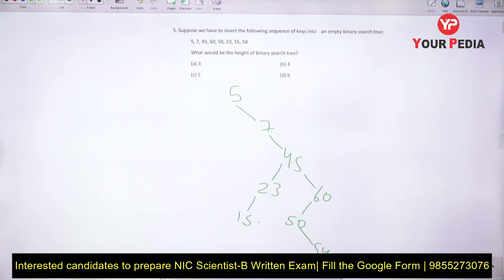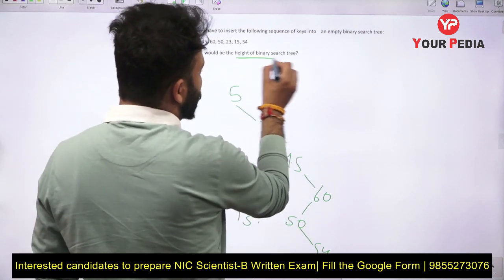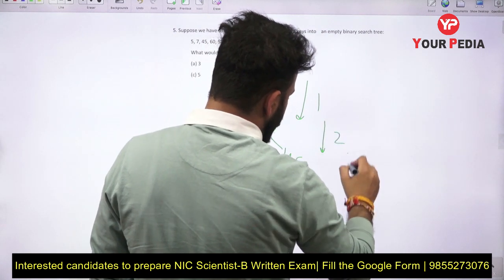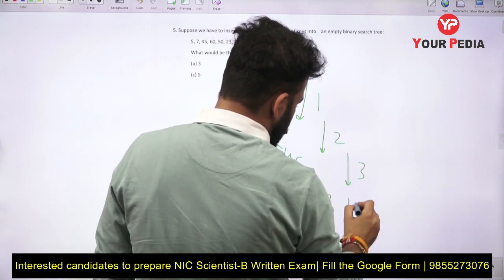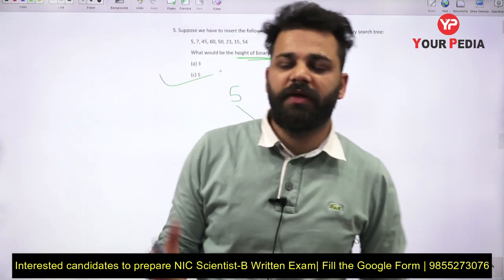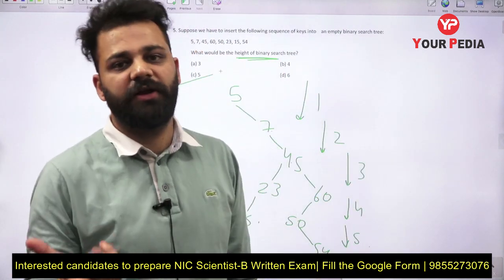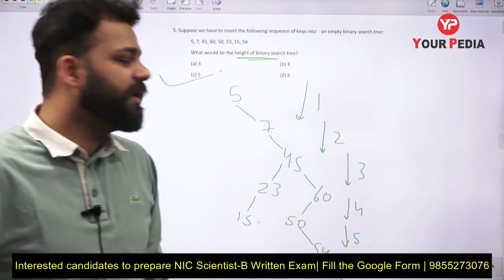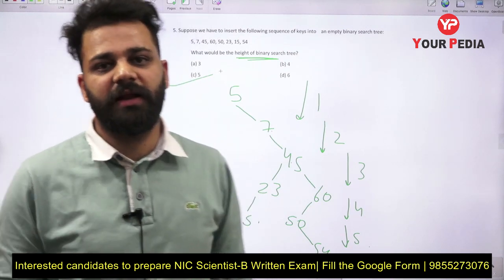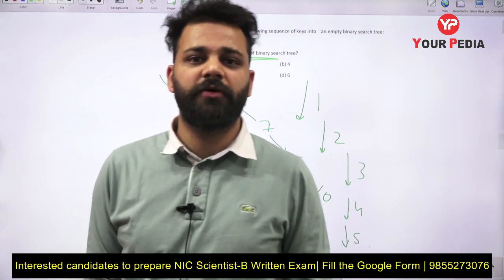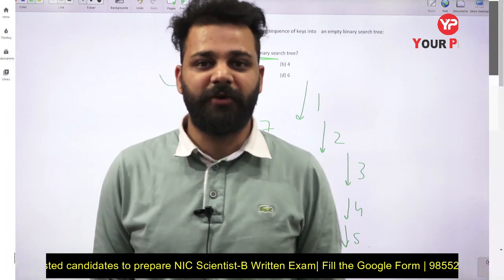After constructing the BST with those keys, the question asks for the height of the tree. Counting the levels: level one, two, three, four, and five — so the height is 5 and the correct answer is option C. These were the questions asked in the 2020 NIC Scientist B exam for data structures and algorithms. I hope you understood the questions and liked the video. Keep preparing and keep watching. Thank you.